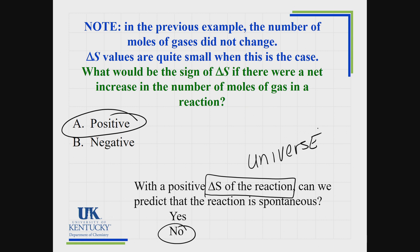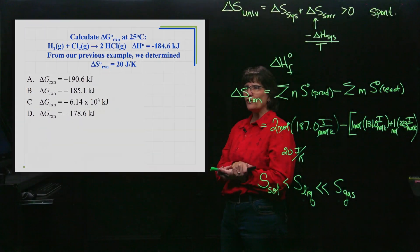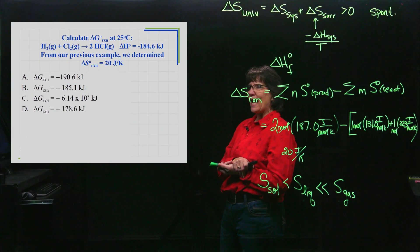The predictor of spontaneity is the ΔS of the universe. So if a reaction has an increase in disorder, if it has a positive ΔS, you cannot yet predict whether it's spontaneous or not. You must take it a little bit further.